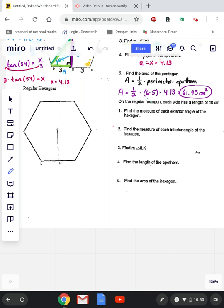Next up, let's take a look at a regular hexagon. So on the regular hexagon, which is six sides, each side has a length of 10 centimeters. So I'm going to go ahead and label every side as 10.